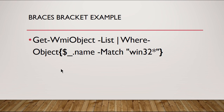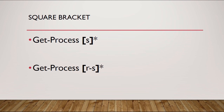This particular commandlet is going to give us information when our object matches the term win32 and then anything after it, because you see the asterisk after the 32. Any time you want to tag on an optional command, you would select the square bracket.